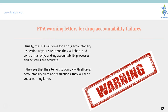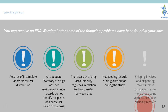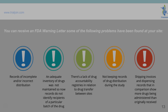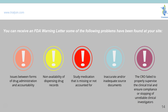The FDA issues warning letters for drug accountability failures. The FDA will check and control whether all your drug accountability processes and activities are accurate, and if a site fails to comply, they will send a warning letter. Reasons you can receive a warning letter include records of incomplete or incorrect distribution, failure to maintain adequate inventory, lack of drug accountability, not keeping records or shipping invoices, dispensing records that show more drugs administered than received, issues between forms of drug administration and accountability, missing study medication, or failure by the CRO to supervise the clinical trial and ensure compliance.